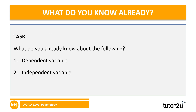A good place to start is with what you already know. We're going to take two very important variables in research — the dependent and the independent variable. Under task one on the worksheet, I'd like you to fill in what you already know about those two variables. It'd be a good idea to pause the video now.